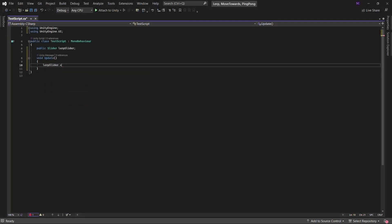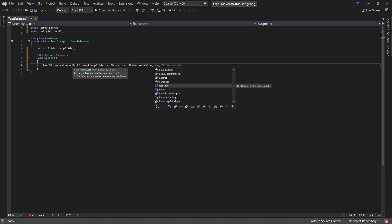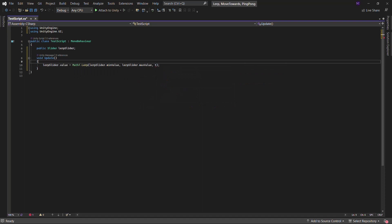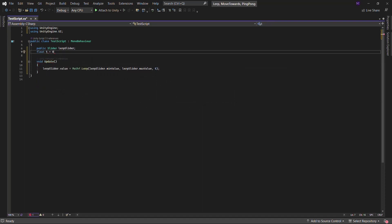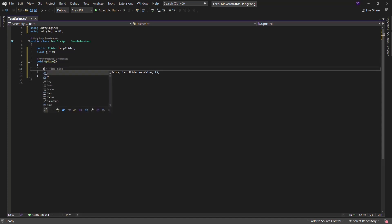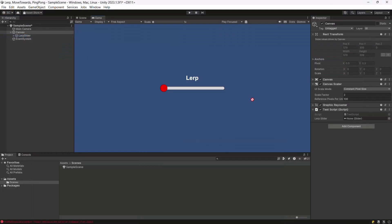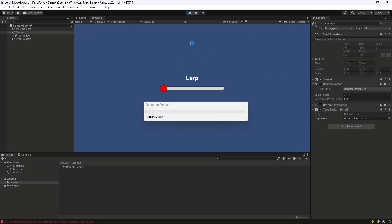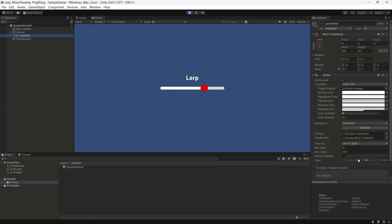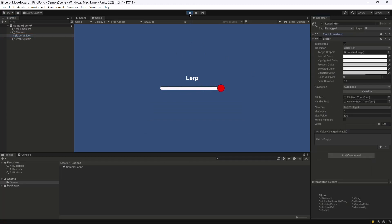Now, going back to our logic, on each frame, we will update the slider value using the slider's min and max values. Now, go back to the scene, assign the slider, and hit play to see the code in action. As you can see, the handle is moving at a constant speed of 10 units per second.